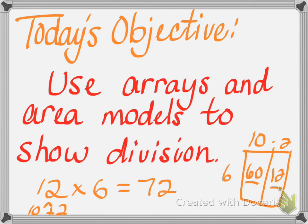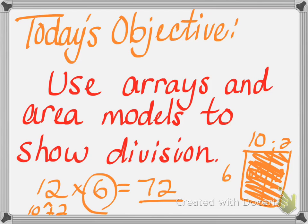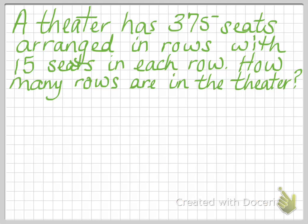Today we're going to do the same thing, only we're going to do division. Which means we're going to start off knowing 72, which is the area, and then one of the numbers on the side, and we have to figure out what the other number is. So that's what we're going to do today.